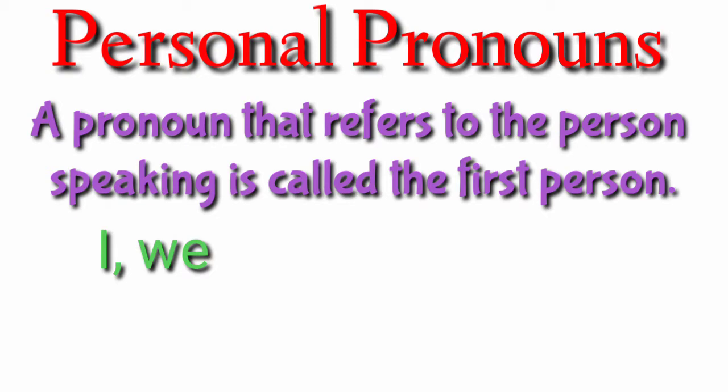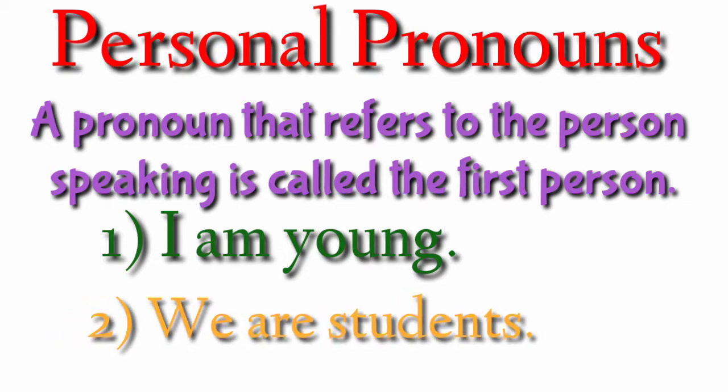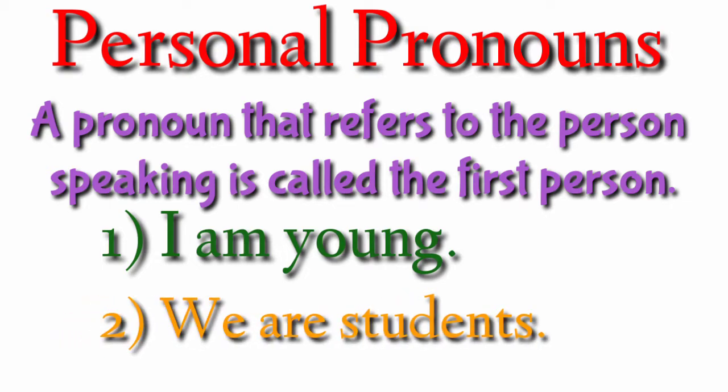Let's use them in examples. 'I am young.' Here, 'I' is the subject and it is a personal pronoun — first person, singular number. 'We are students.' This is also a personal pronoun, but this is plural. So 'I' and 'we' are the first person, and the speaker is always in the first person.